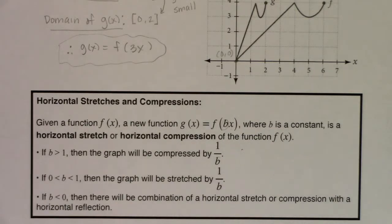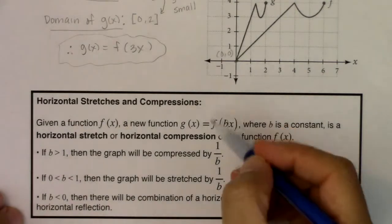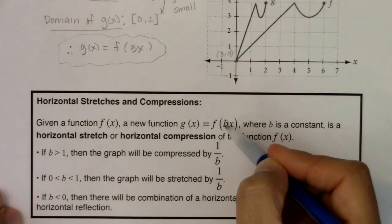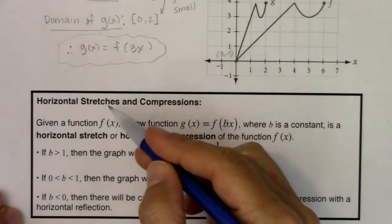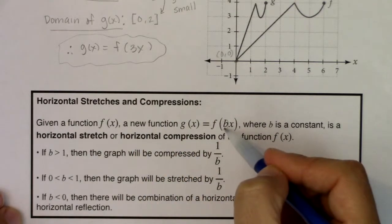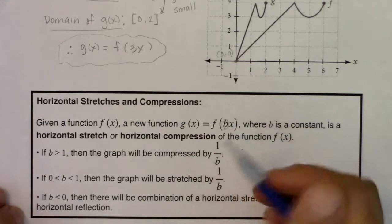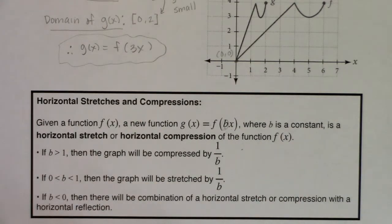We've taken a look at vertical stretching and shrinking when the multiplier is outside the function, and we've taken a look at horizontal stretching and compressing where the multiplier is inside the function. So the next example, we're going to look at reflections over the x and y axis. I'll see you in a few, gang. Bye.